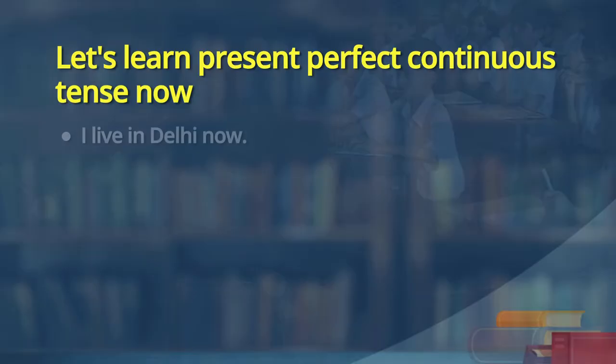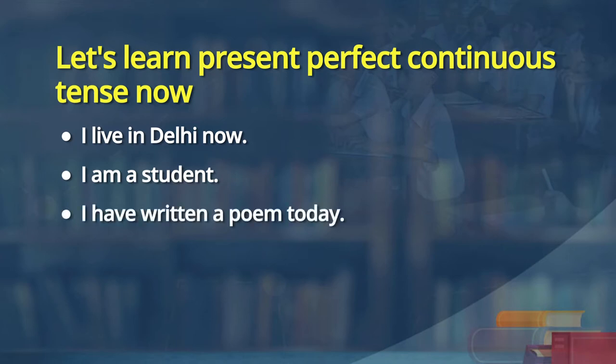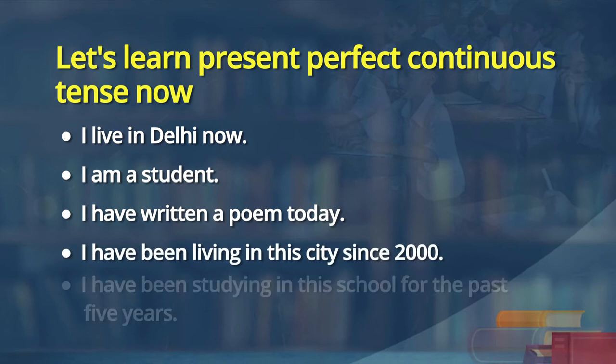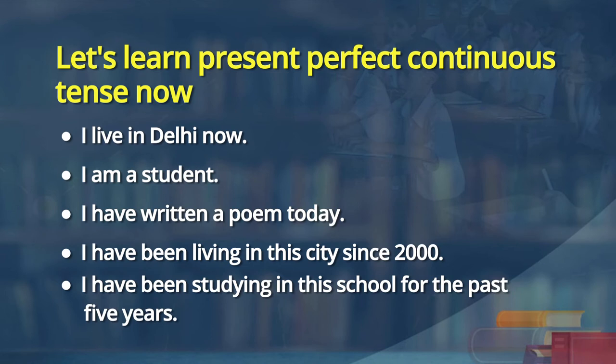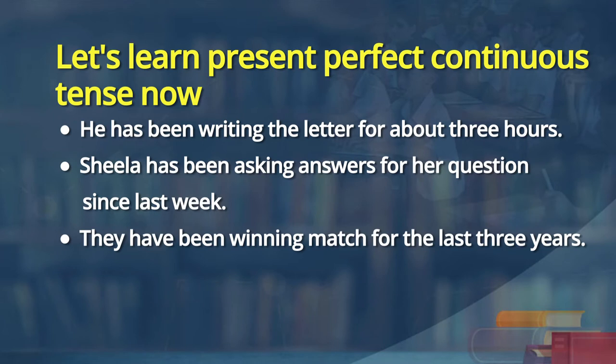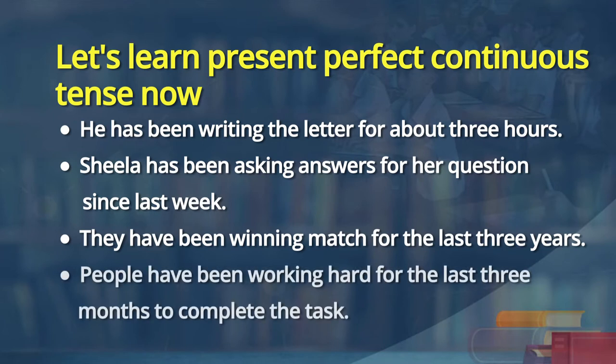Here are the sentences for you learners. One: I live in Delhi now. Two: I am a student. Three: I have written a poem today. Four: I have been living in this city since 2000. Five: I have been studying in this school for the past 5 years. Six: He has been writing the letter for about 3 hours. Seven: Sheela has been asking answers for her questions since last week. Eight: They have been winning matches for the last 3 years. Nine: People have been working hard for the last 3 months to complete the task.